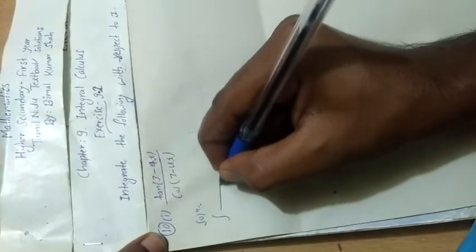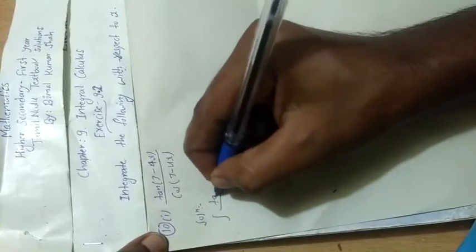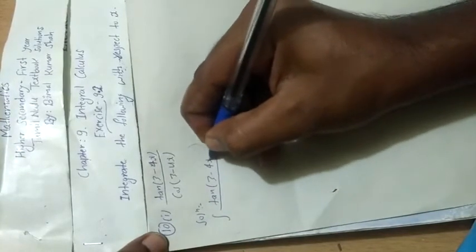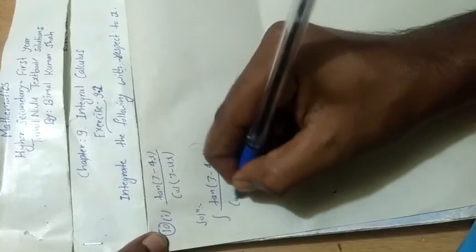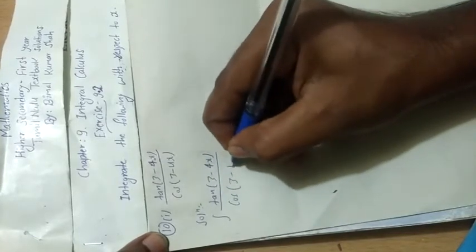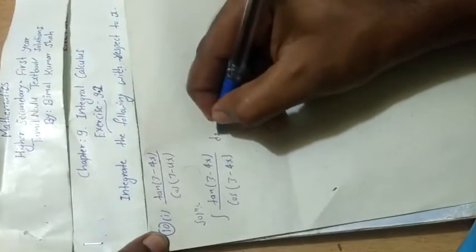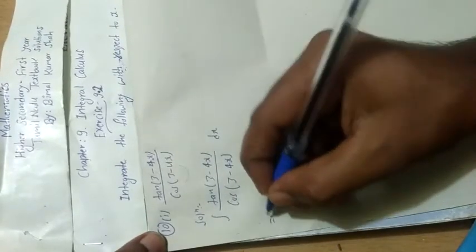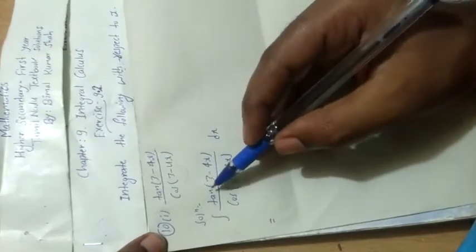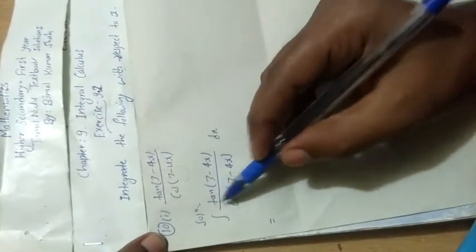Hi everyone, welcome back to Exercise 9.2, question number one of ten. So now integrate, write here integral sign, after that tan of 3 minus 4x upon cos of 3 minus 4x, with respect to x, write here dx.